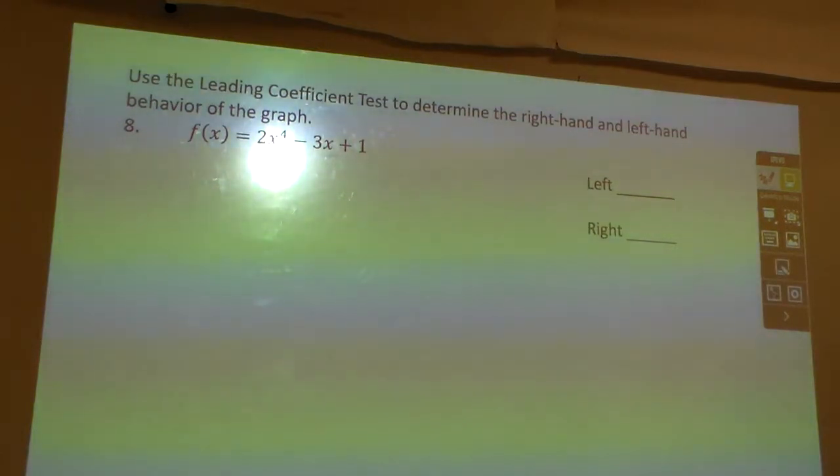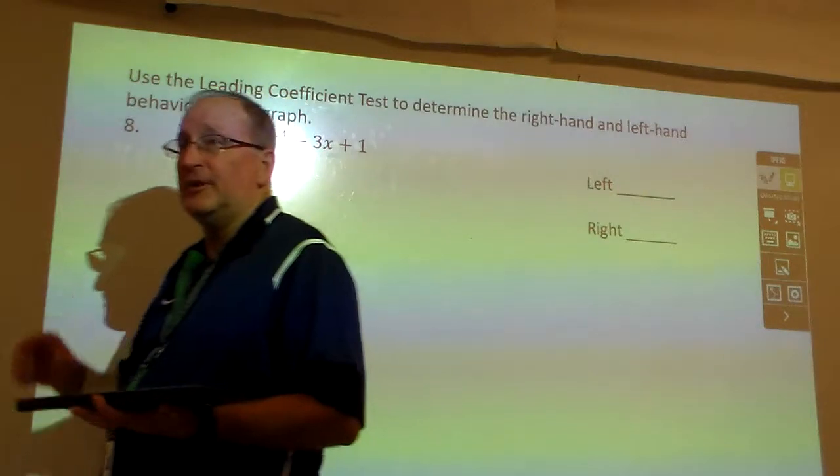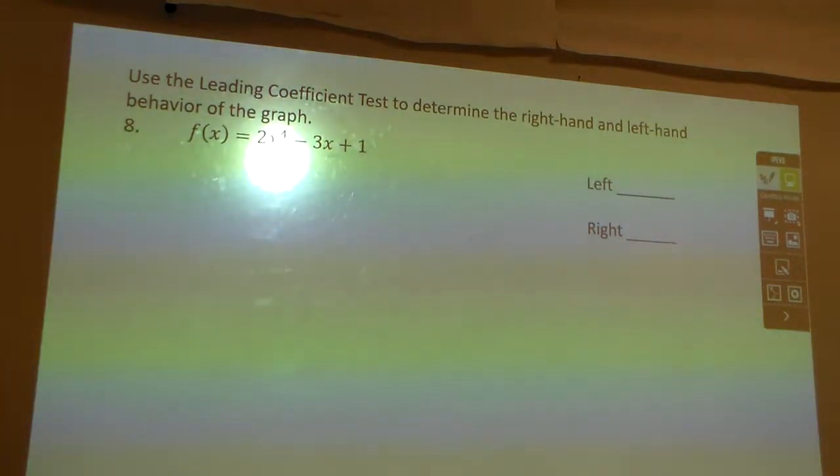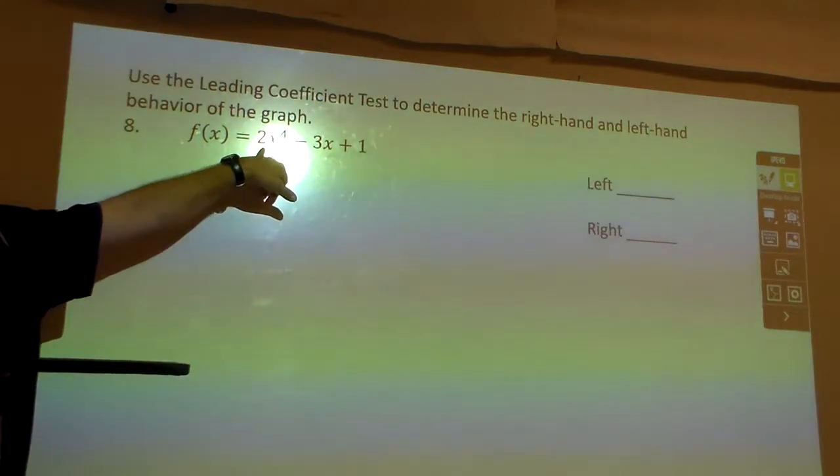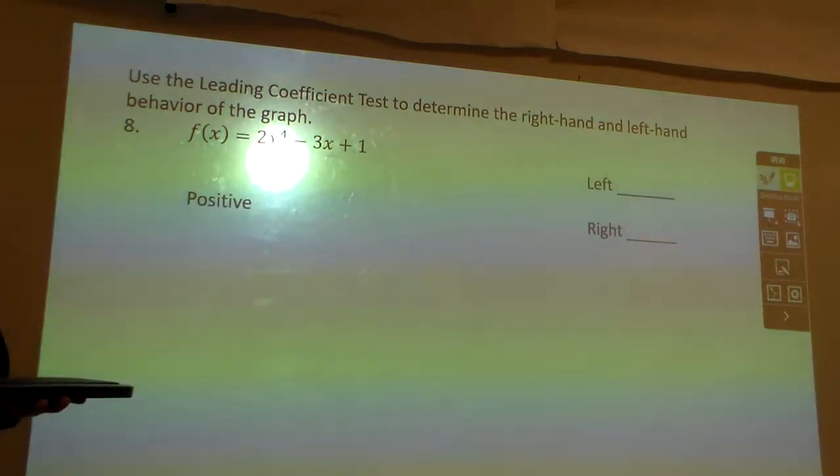Easiest way to do this is right here. Look at the number in front of the highest exponent, that's called the leading coefficient. The number for x is our coefficients. What is the number in front of this x to the fourth? It's a two. What is two? Positive.